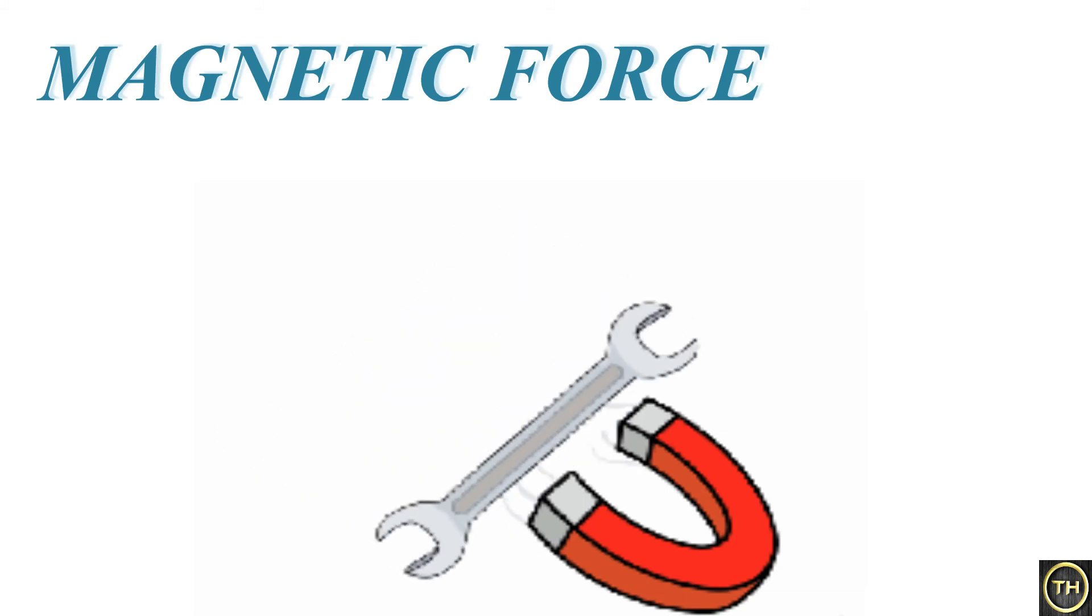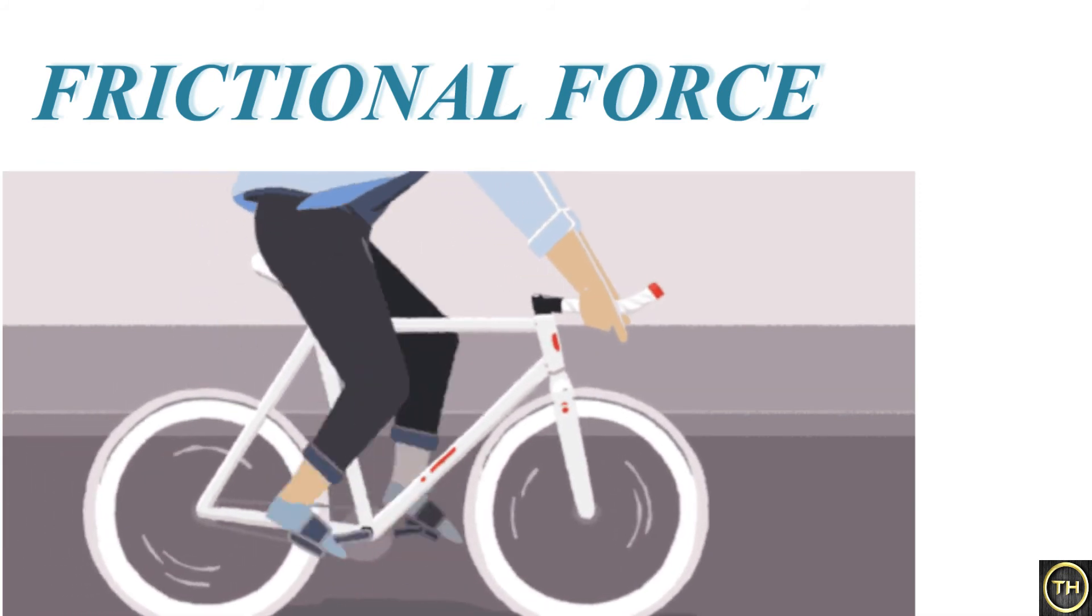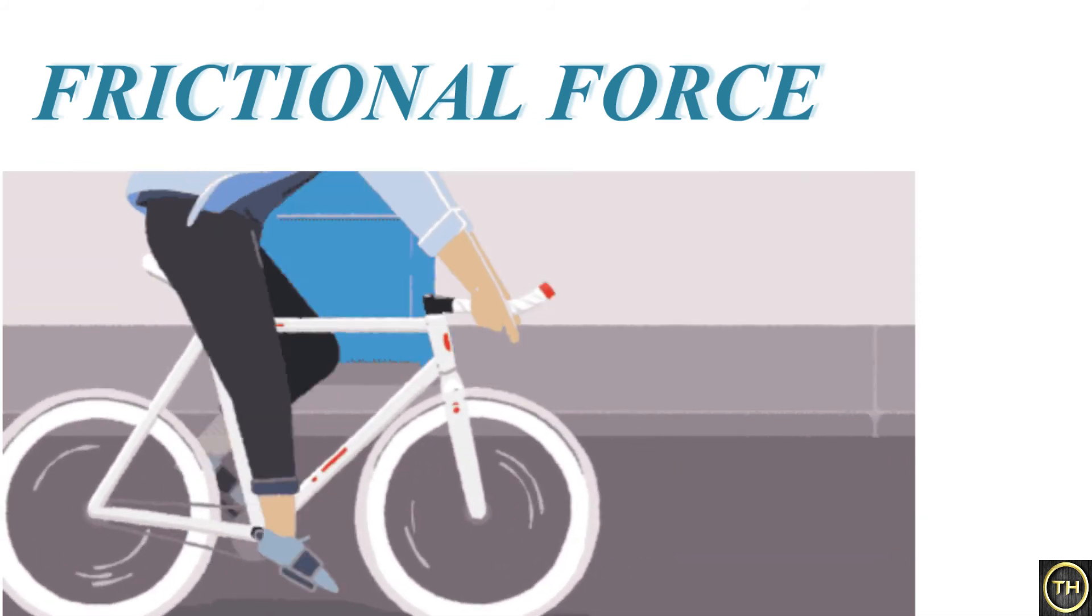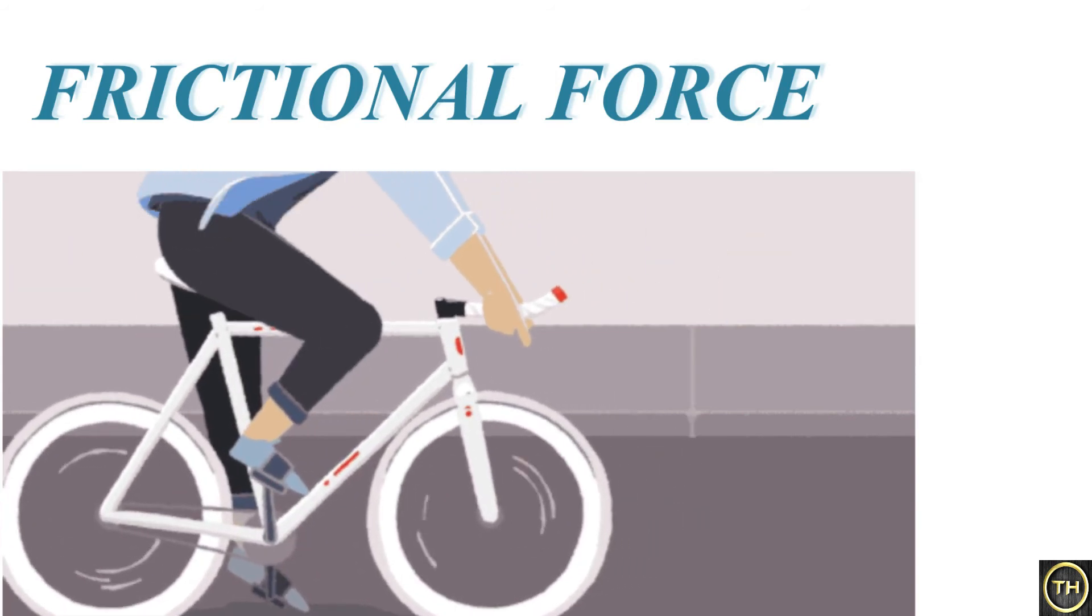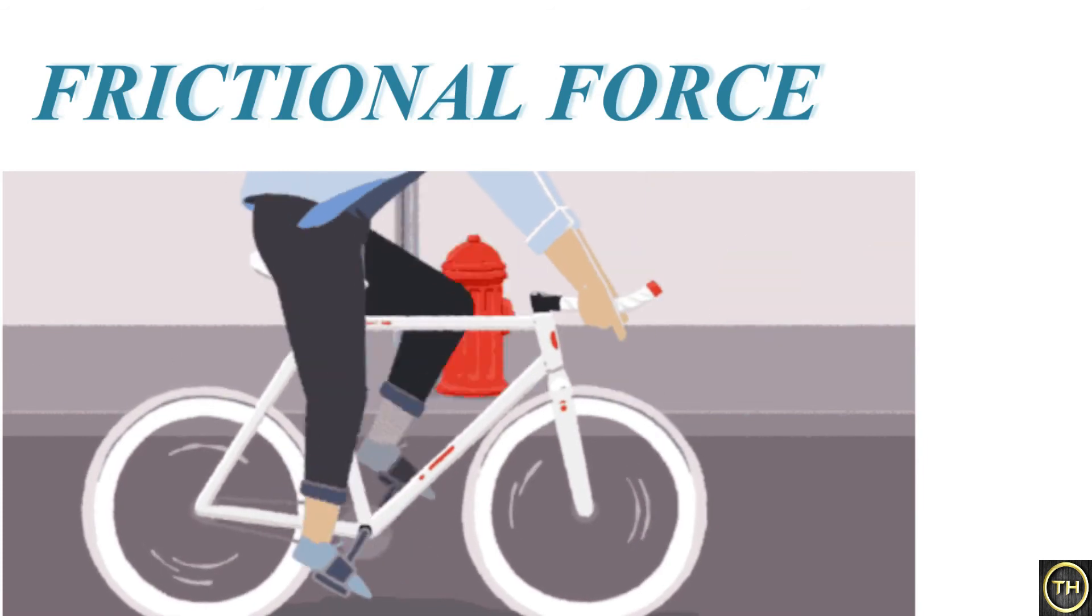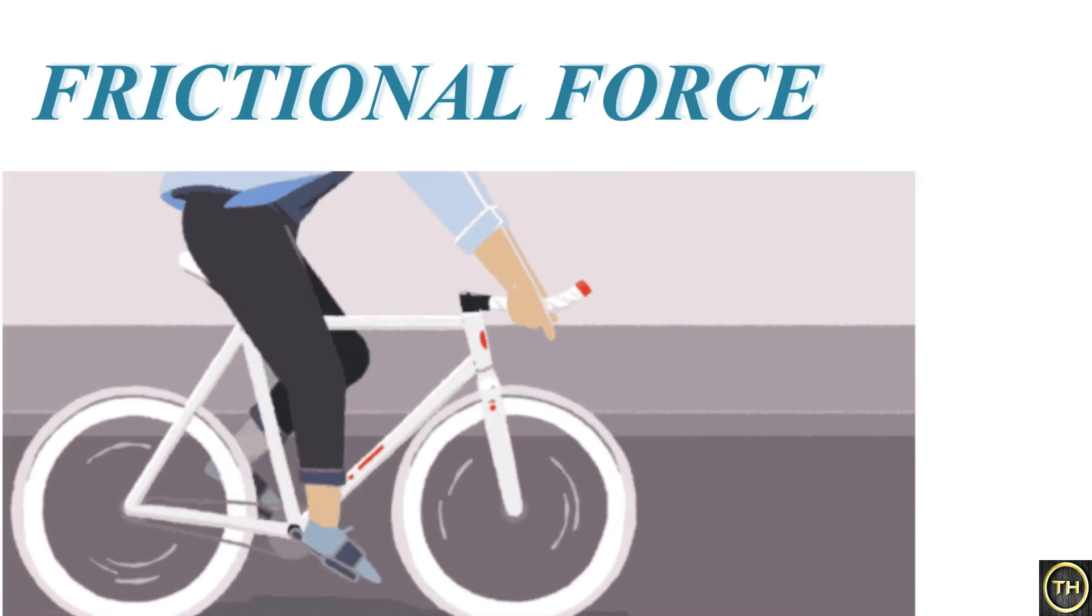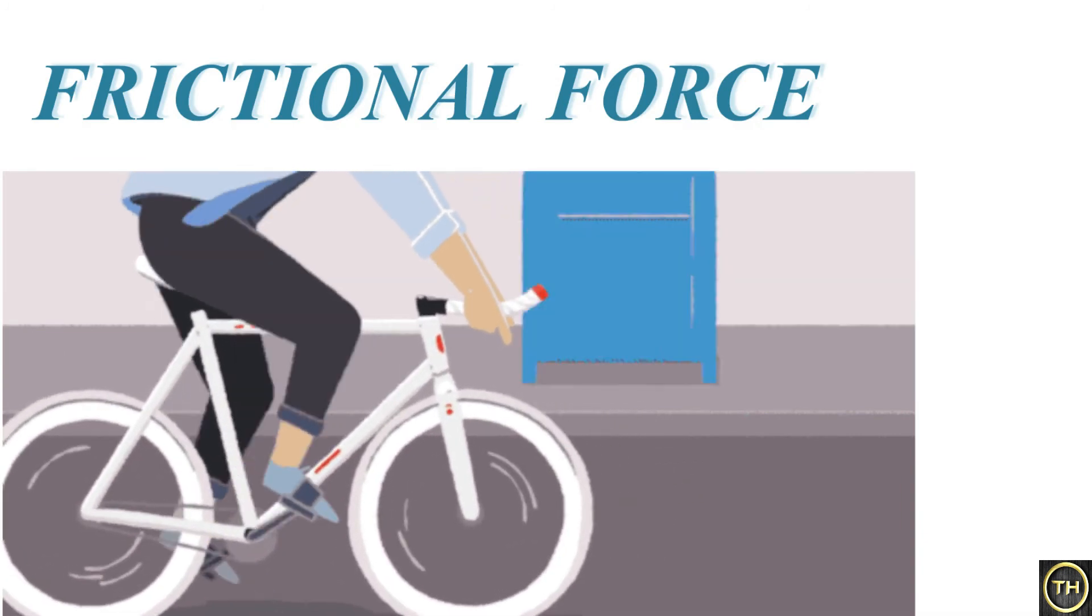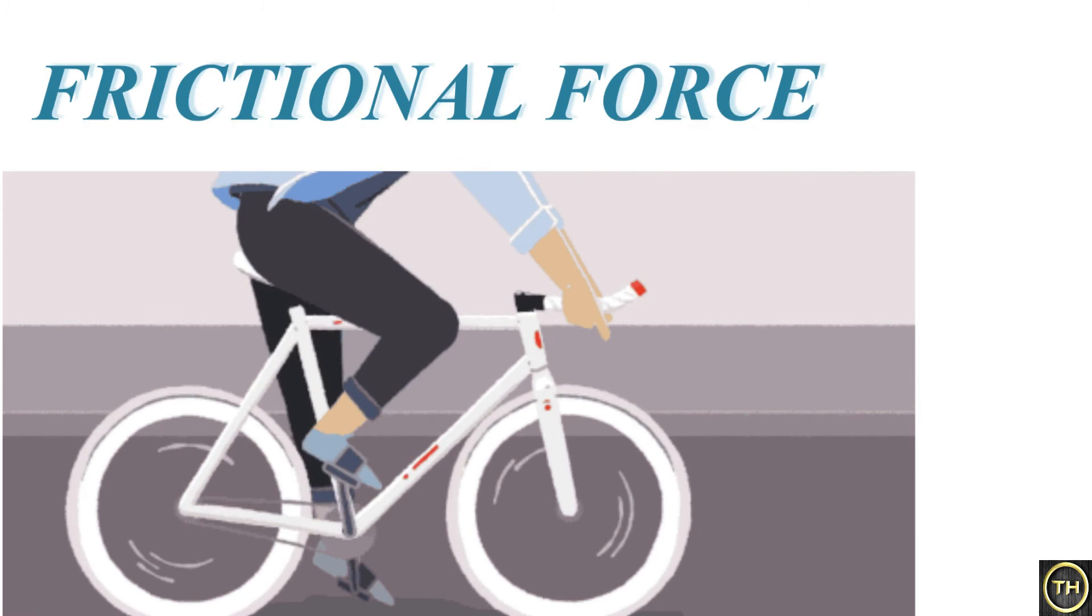Next force is frictional force. When two surfaces rub against each other, the force of friction comes into play. It always acts against the direction of motion. For example, when a brake is applied while riding a bicycle, it stops after running a short distance. That is called frictional force.